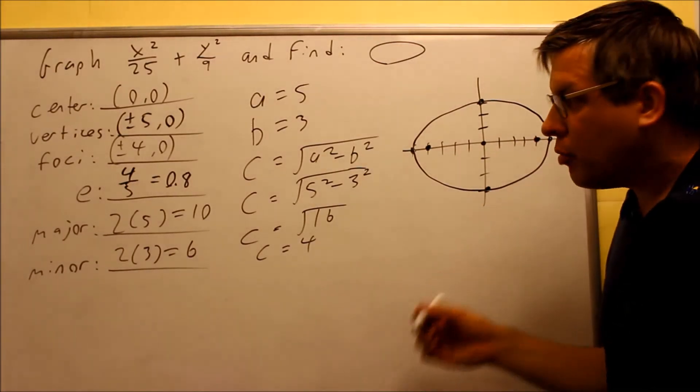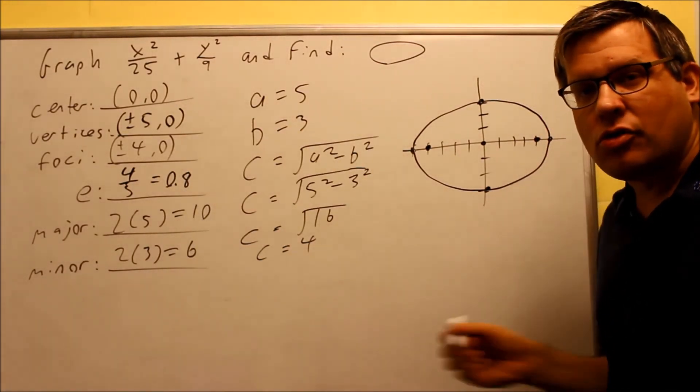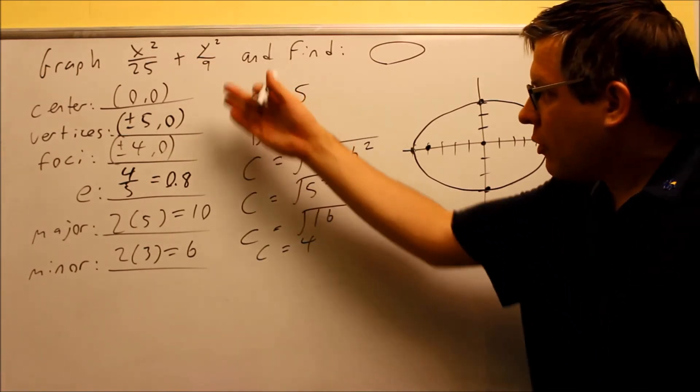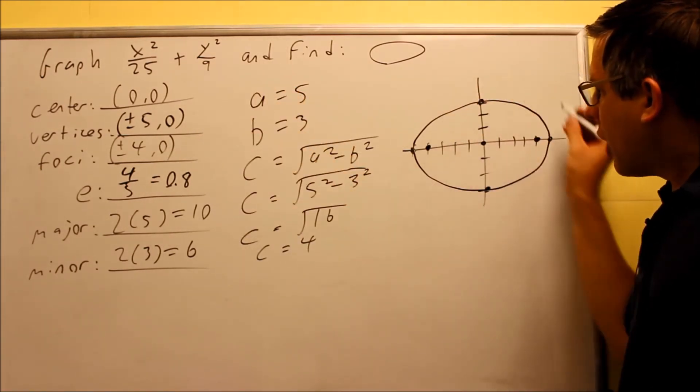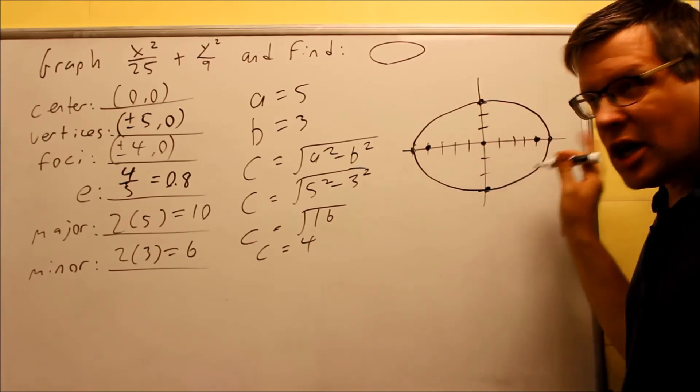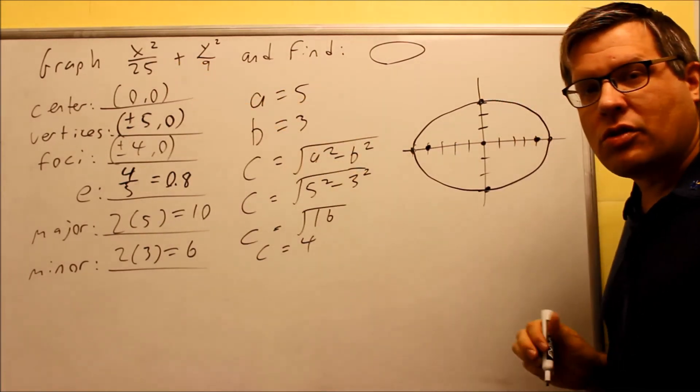Now again, if you wanted to use the formulas, it would be plus or minus c comma 0. You could most certainly do that as well. But now we've answered all the questions. Here's our graph again. The graph we know opens up sideways because the larger number was underneath the x. So that's the graph.